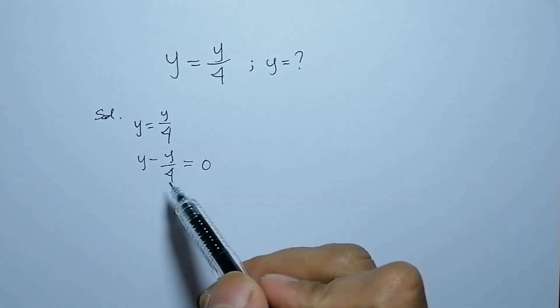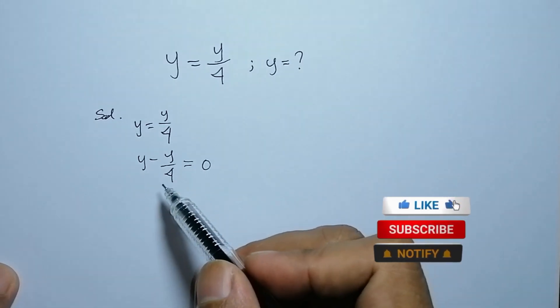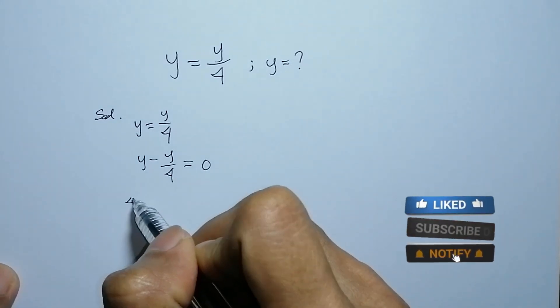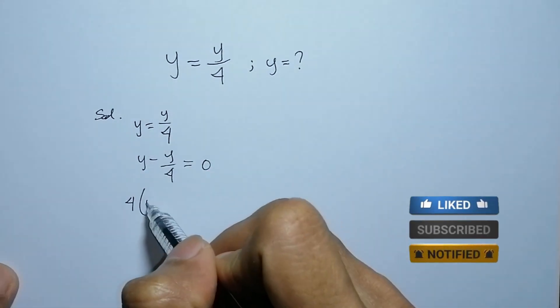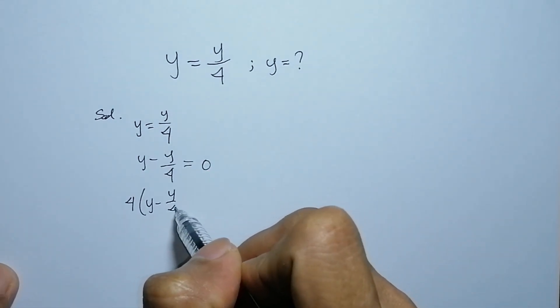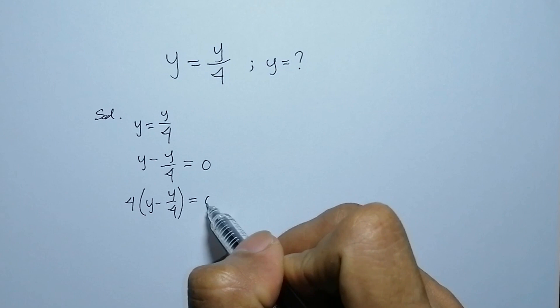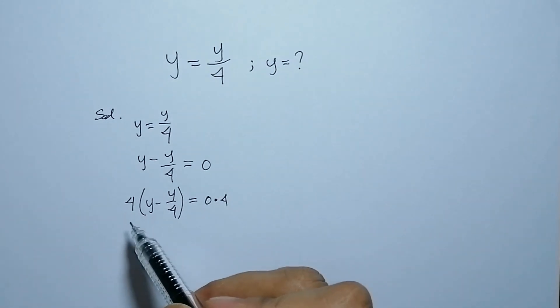Now, we're going to multiply both sides by 4. So y minus y over 4 equals 0 multiplied by 4.